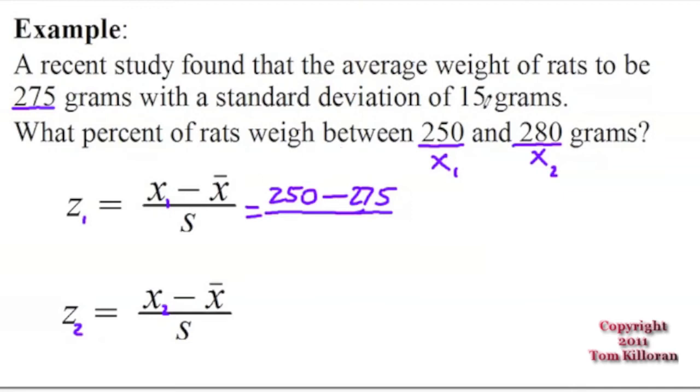We're going to take this difference and divide by the standard deviation, which happens to be 15 grams. So we type this into our calculator. Now to get this answer, make sure you type in the top numbers first, hit equals, then divide by 15. You should be getting negative 1.67.